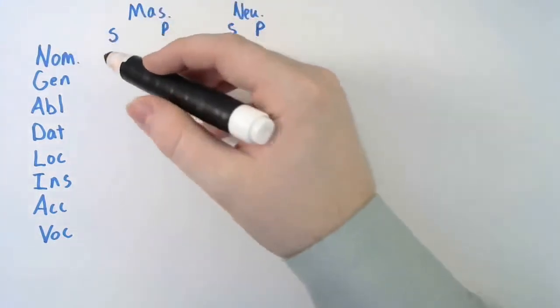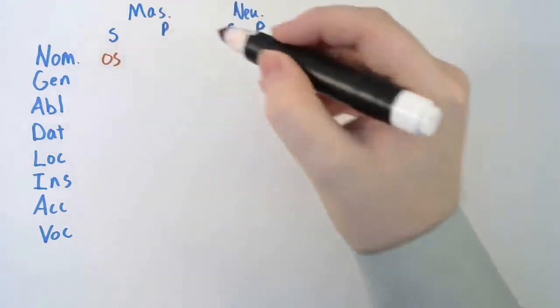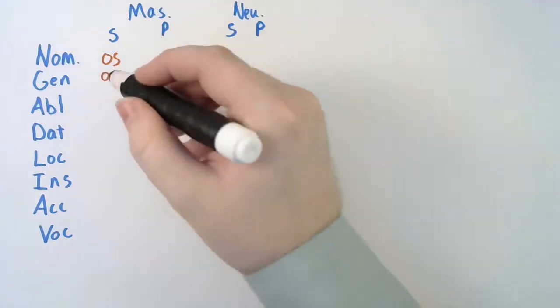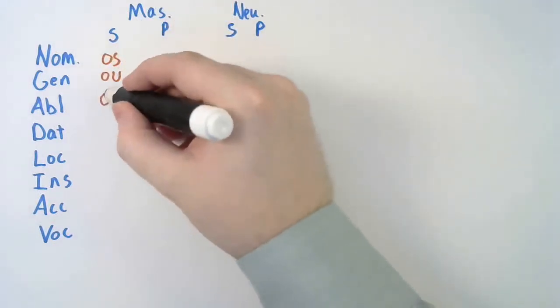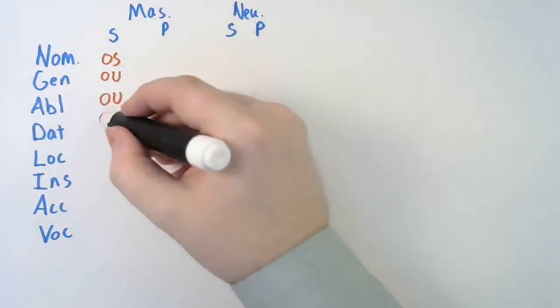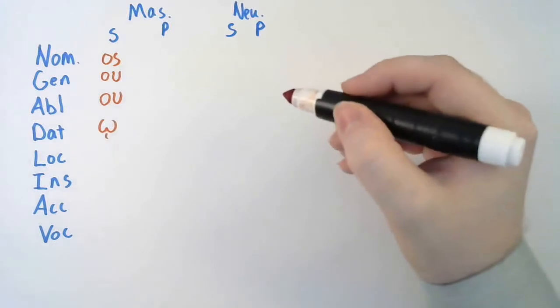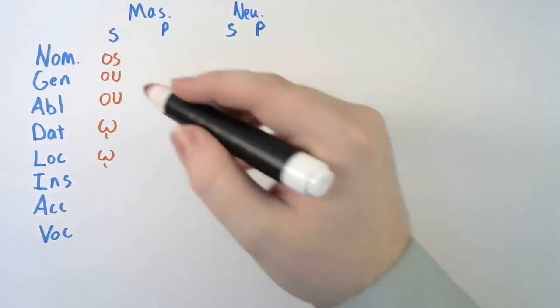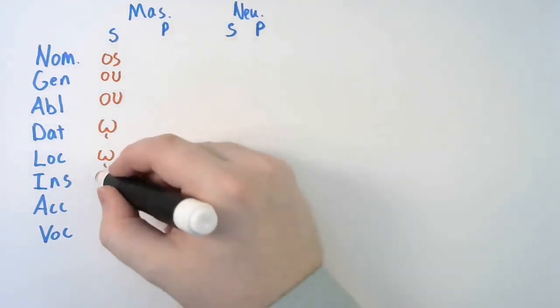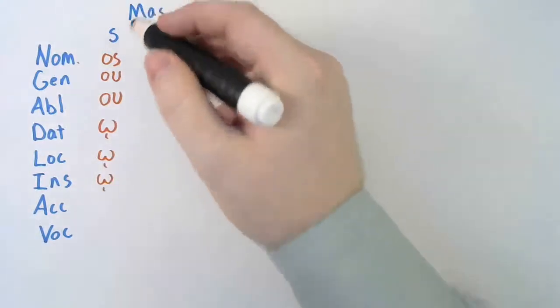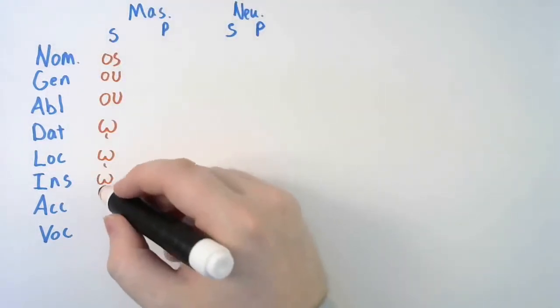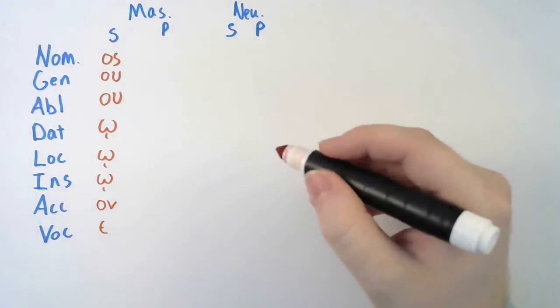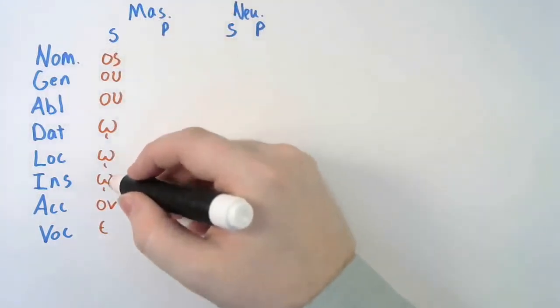Nominative. Well, a masculine singular nominative, the ending is os. Masculine singular genitive is ou. Masculine singular ablative is ou. Masculine singular dative is o, with an iota subscript. Masculine singular locative is o, with an iota subscript. Masculine singular accusative is on, and masculine singular vocative is e. So, os, ou, ou, o, o, o, on, e.